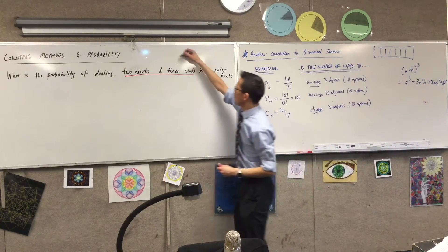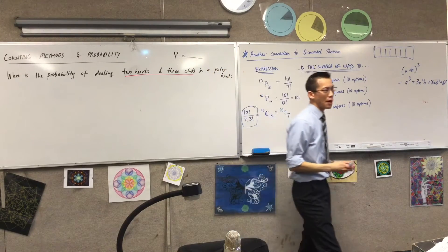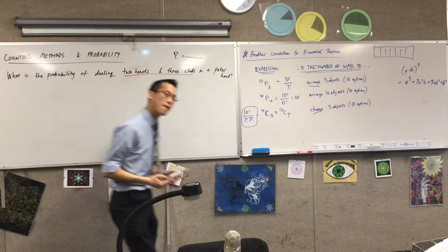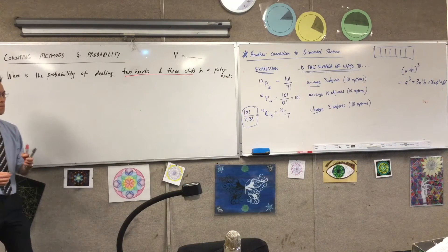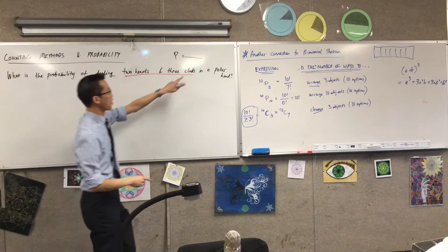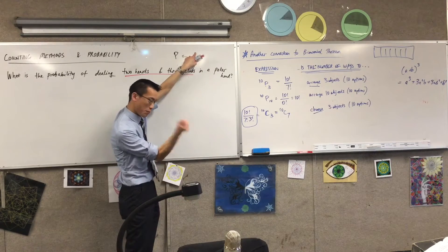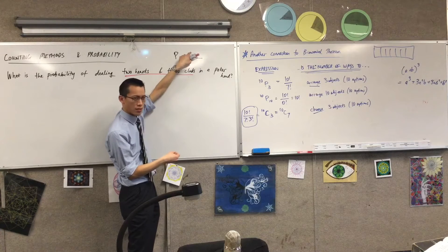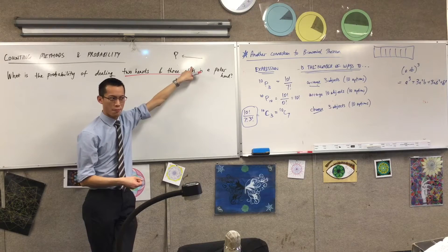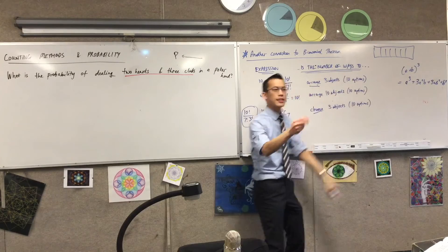Now, remind me — if you want to find the probability of an event, it's a fraction. What are you dividing by what? What's on the top and what's on the bottom? The chances of getting the event. We want a specific event. What I have up here that I'm going to divide is the number of ways — number of ways to get the thing that you're after.